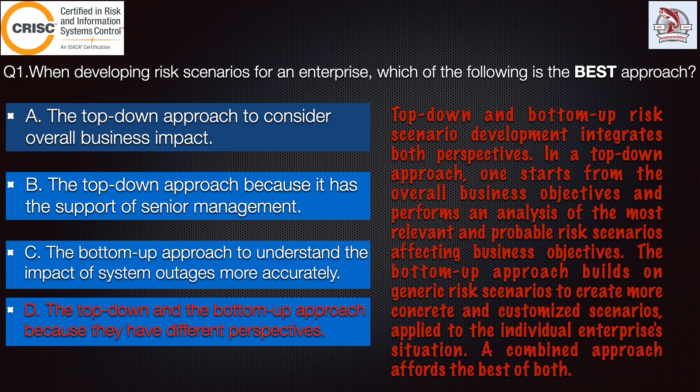Option C — the bottom-up approach to understand the impact of system outages more accurately — is also incorrect because the bottom-up approach is too narrow. Risk cannot be separated from the business objective, which is why this option is also incorrect.